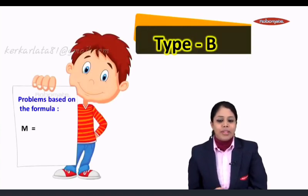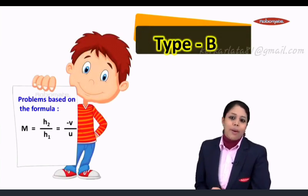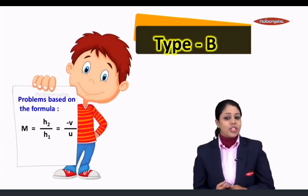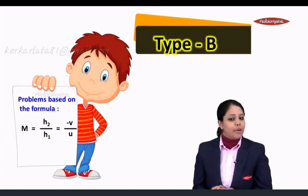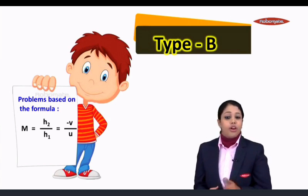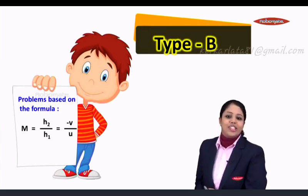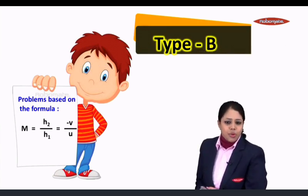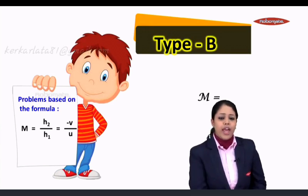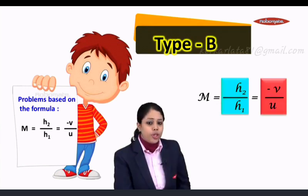M is equal to H2 upon H1, which is equal to minus V upon U. Here H2 stands for height of the image, H1 stands for height of the object, V stands for image distance, and U stands for object distance.